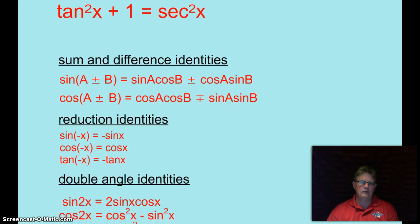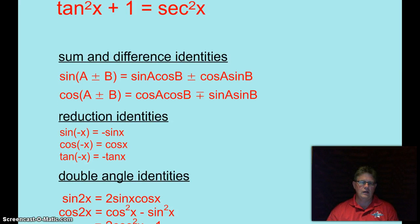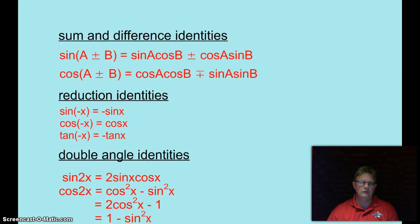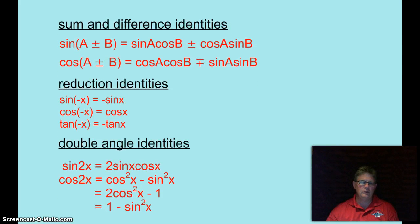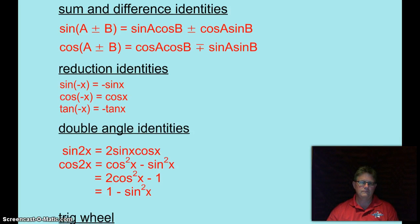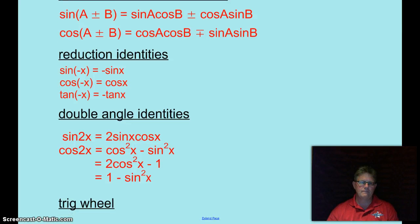Double angle identities. Sine of 2x equals 2 sine x cosine x. And the cosine of 2x could possibly equal one of those three terms. And filling out the trig wheel. Yeah, I think we'll do that in class. So if you need any help there, we'll move along and we'll do that in class.